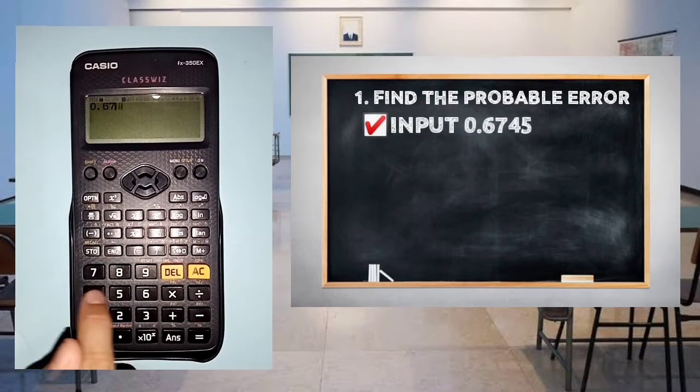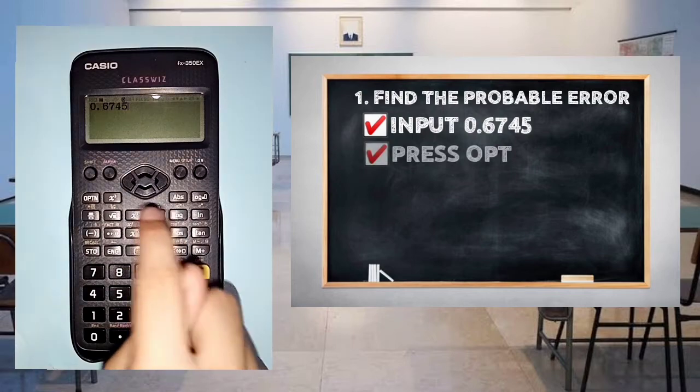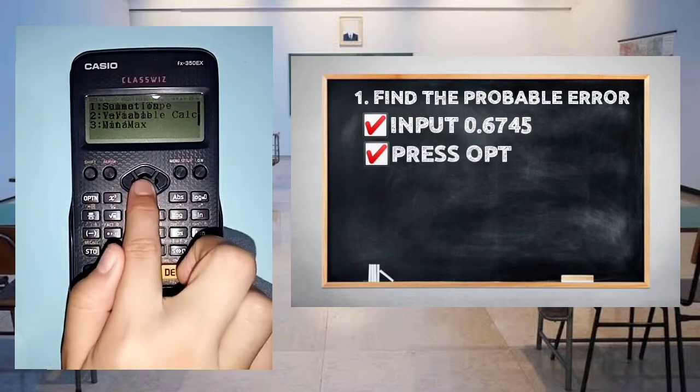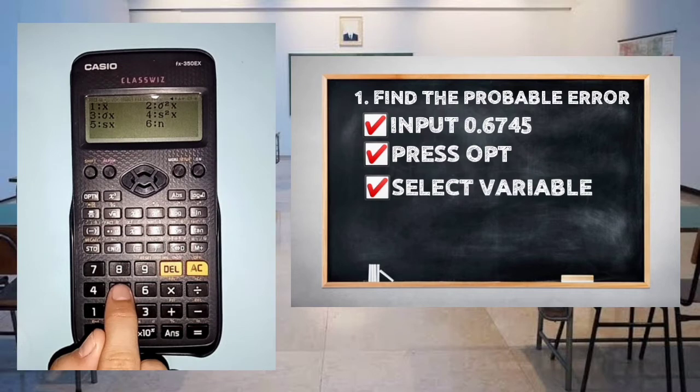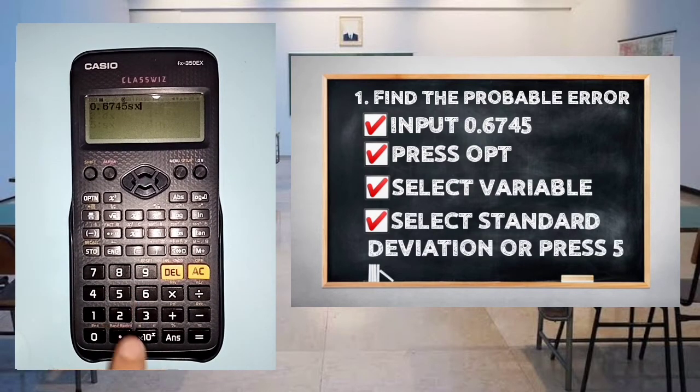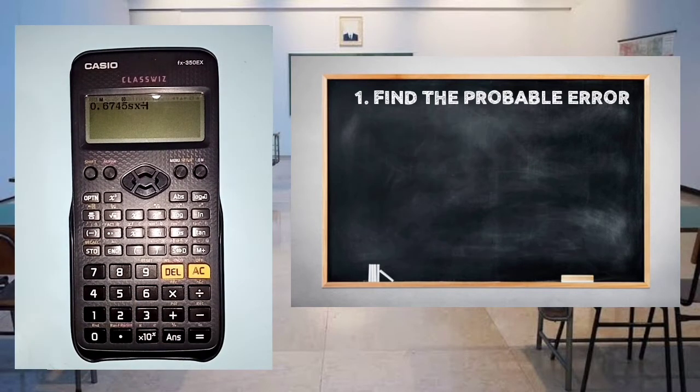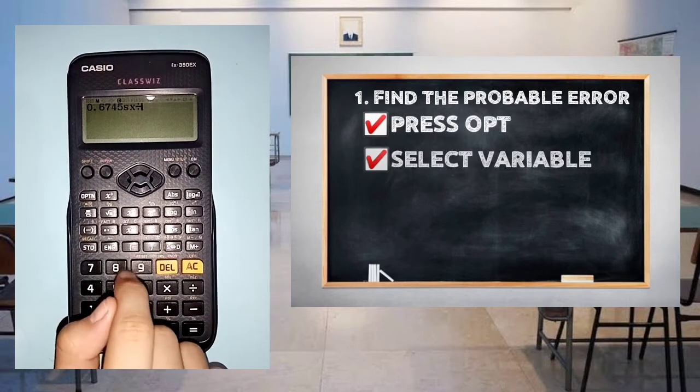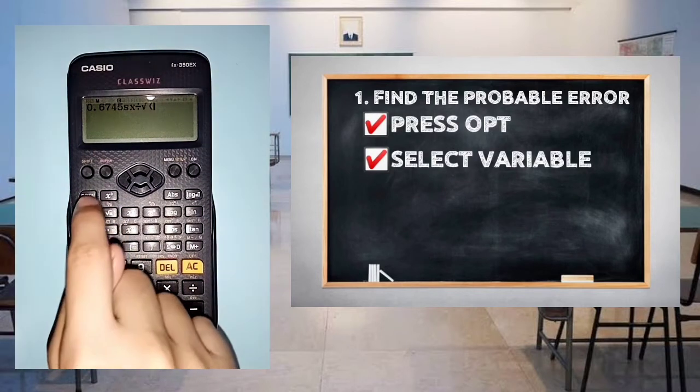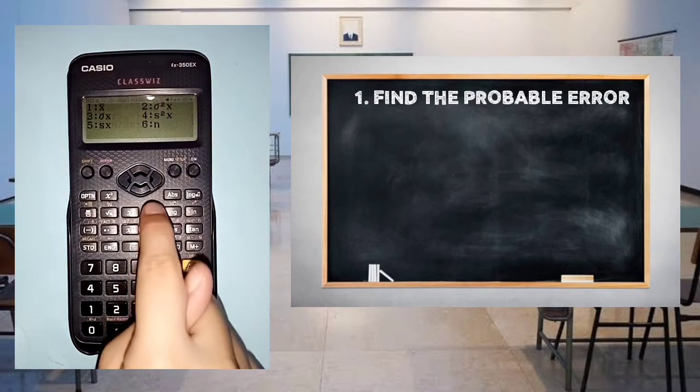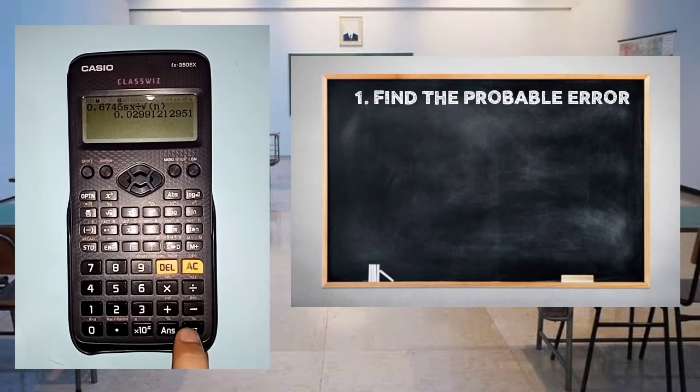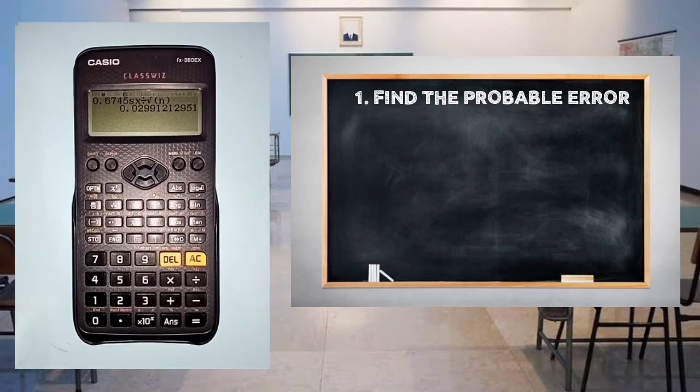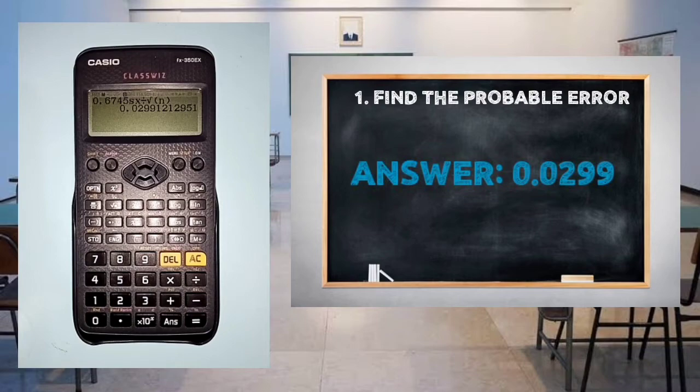Input 0.6745, then press option. Scroll down and select variable. Next, select standard deviation or press 5, divided by square root of number size or press 6. The final answer for probable error equals ±0.0299.